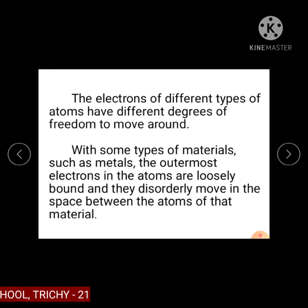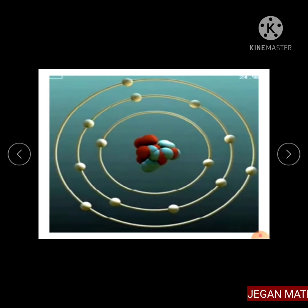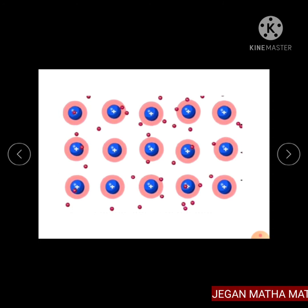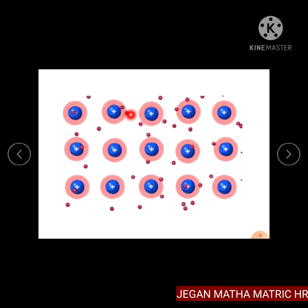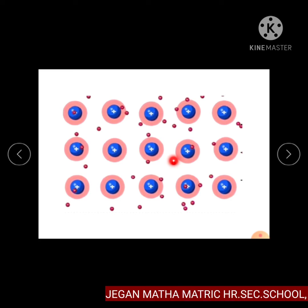The electrons of different types of atoms have different degrees of freedom to move around. With some types of materials such as metals, the outermost electrons in the atoms are loosely bound, and they disorderly move in the space between the atoms. Because these virtually unbound electrons are free to leave their respective atoms and float around the space between adjacent atoms, they are often called free electrons.